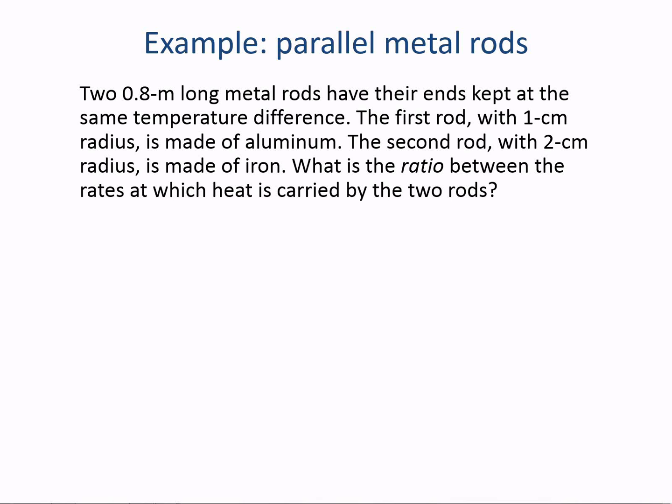Here's an example. Two 0.8 meter long metal rods have their ends kept at the same temperature difference. The first rod with one centimeter radius is made of aluminum. The second rod with two centimeter radius is made of iron. What is the ratio between the rates at which heat is carried by the two rods? First of all we could make a sketch.